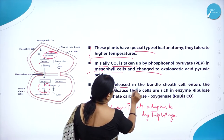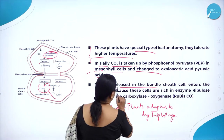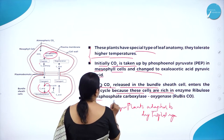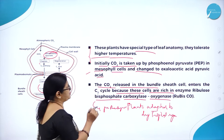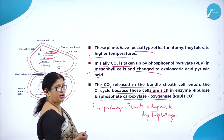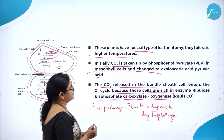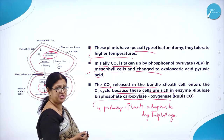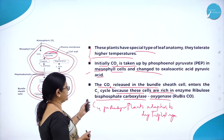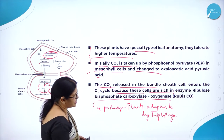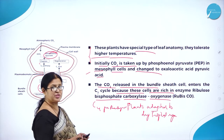The CO2 released in the bundle sheet cell enters the C3 cycle, because these cells are rich in the enzyme called ribulose bisphosphate carboxylase oxygenase — short form is RuBisCO.